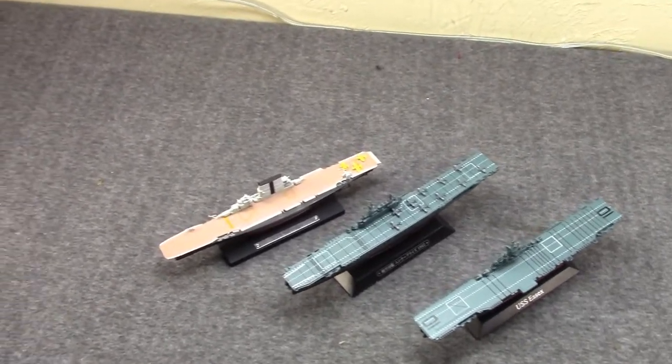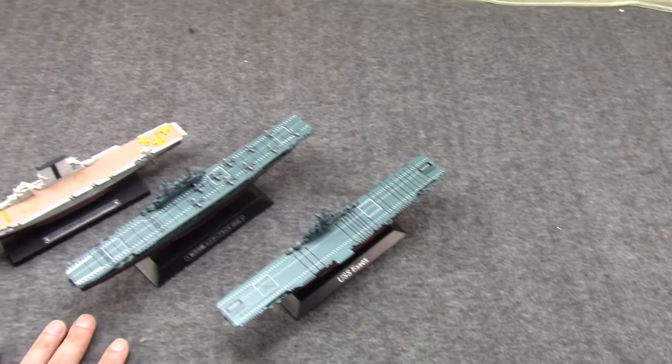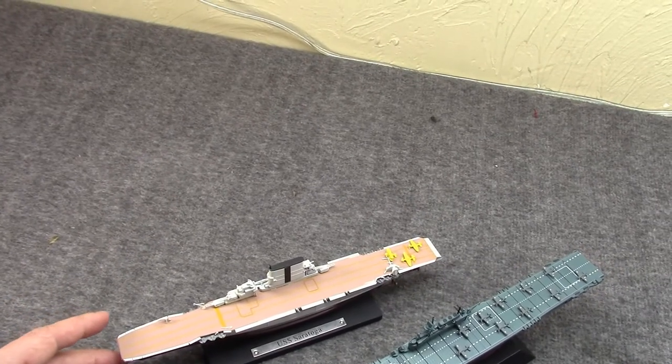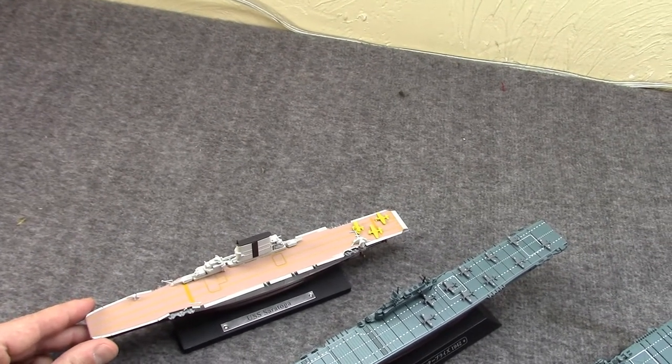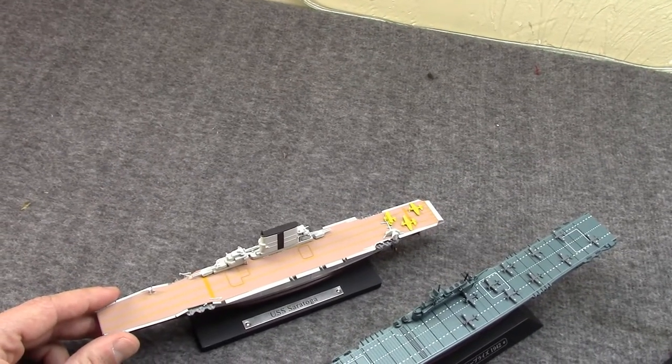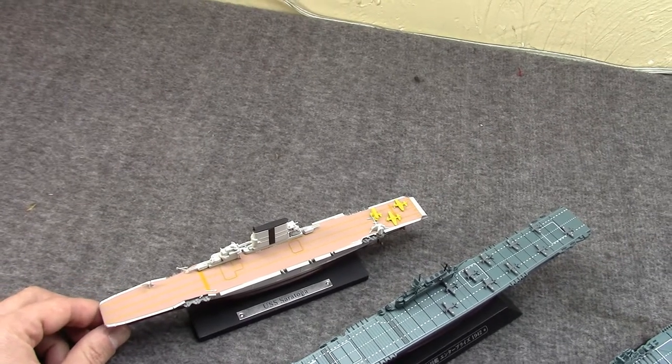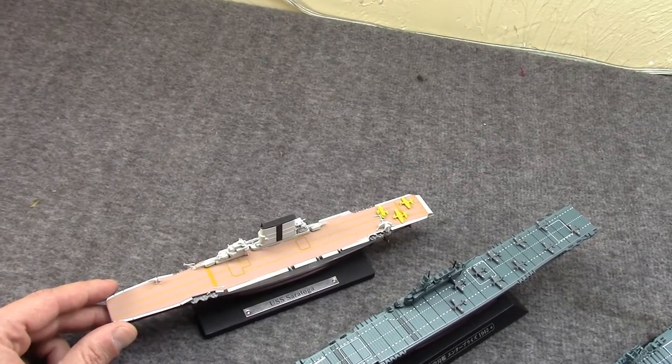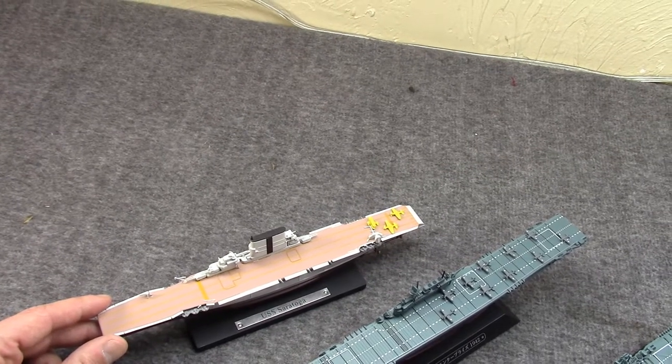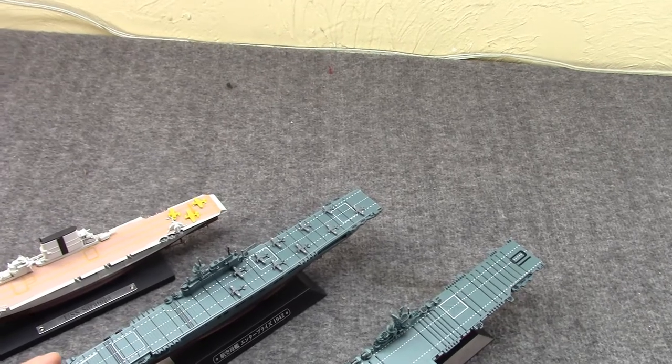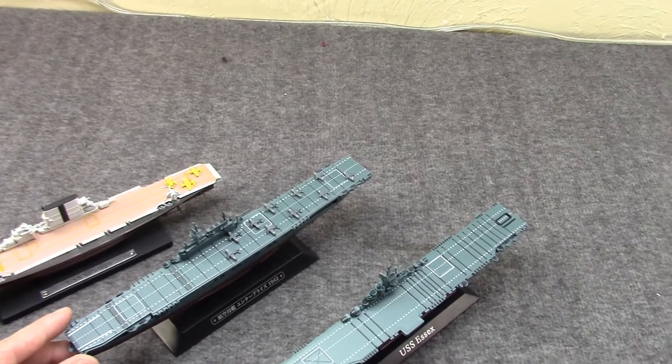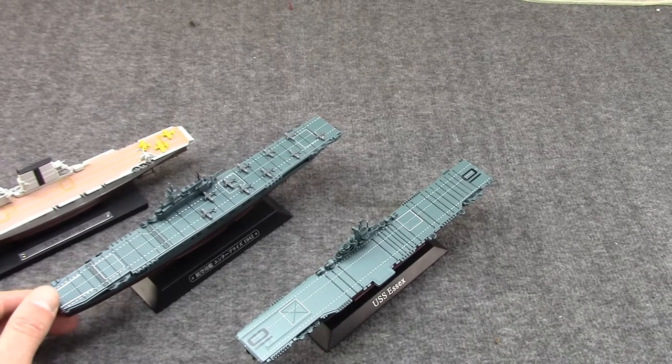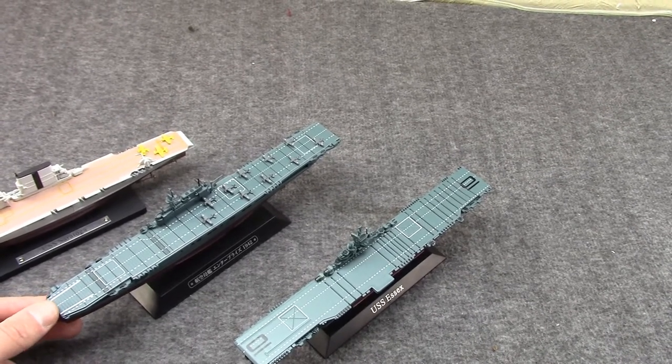And I have three different classes of carriers out here from World War II. Over here we have the USS Saratoga of the Lexington class. These were really the first proper fleet carriers in the U.S. They kind of date back before and during the Washington Naval Treaty. In the middle, we have the USS Enterprise of the Yorktown class. There were three of these in the class, and these date very much to the Treaty era and immediately after it.